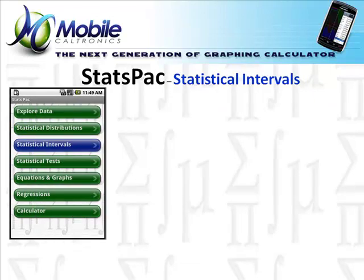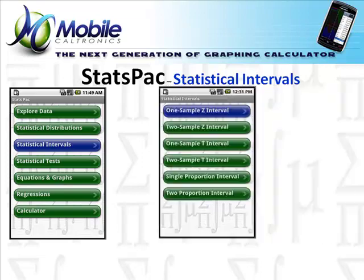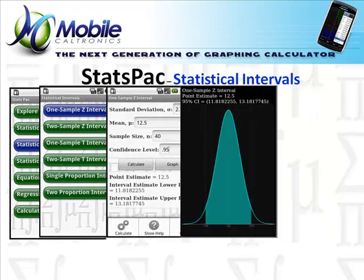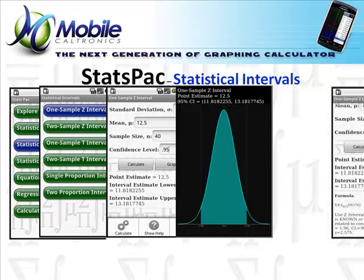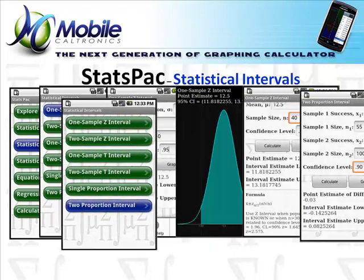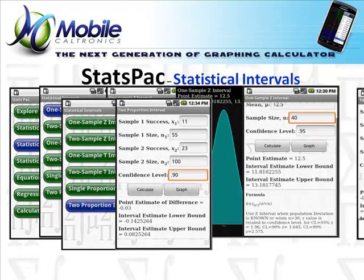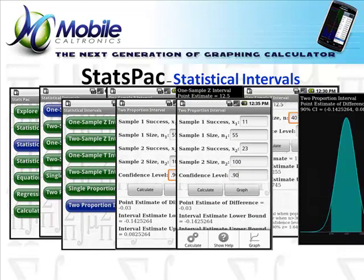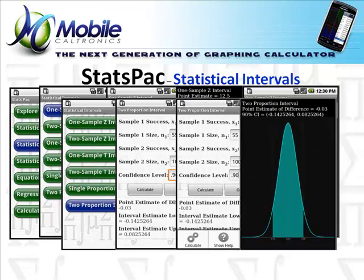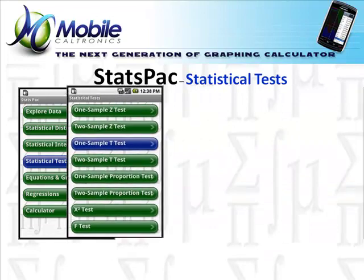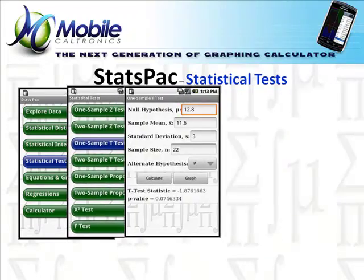The statistical intervals options include all the ones you normally associate with confidence intervals, both 1 and 2 sample. They all come with a calculate and graph button. The graphs are fully interactive, they can be saved, and of course each option comes with its own screen help.